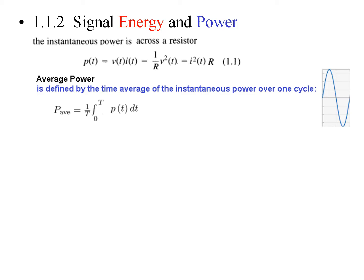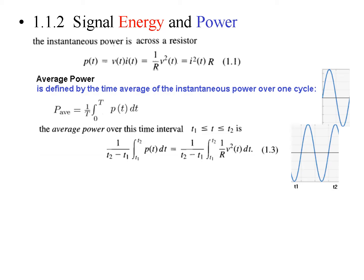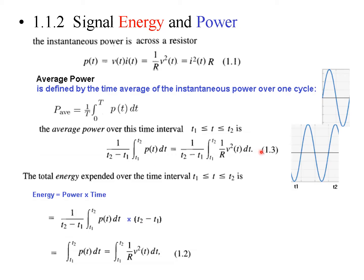Now P(t) will become squared, so this will become a positive signal. If instead of one time period we take a longer time, say from T1 to T2, and we want to find the average power, we replace T with T2 minus T1 and replace the limits from T1 to T2. Power can be written as V squared over R or I squared times R. We just learned that energy equals power multiplied by time, so multiplying by time T2 over (T2 minus T1) these cancel and we get the energy equation.